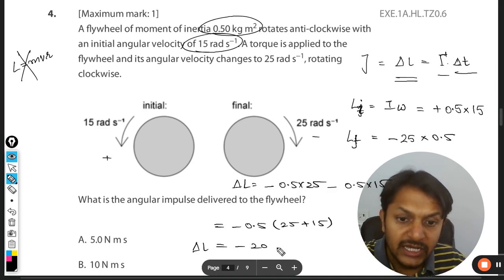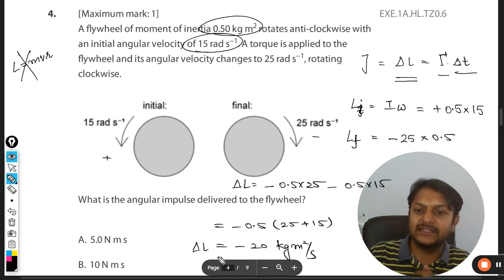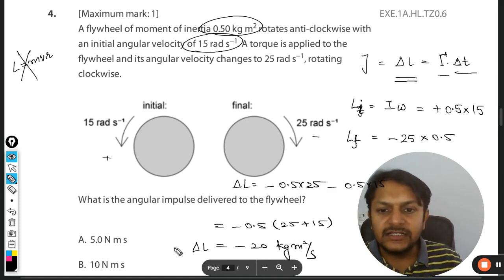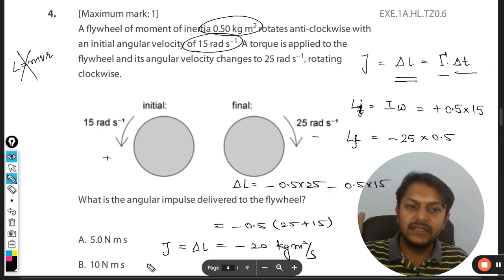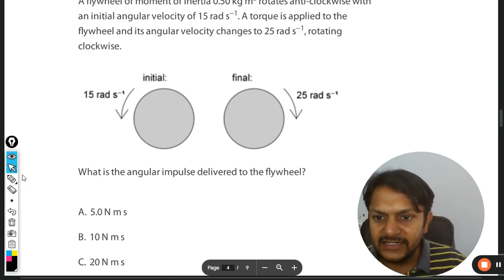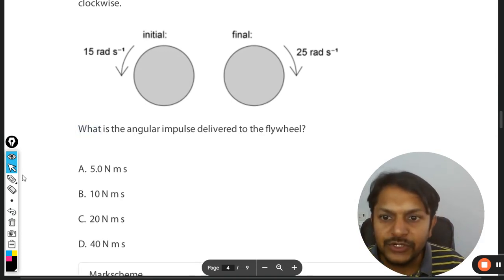So the angular momentum—change in angular momentum—is coming out to be 20, which is kg m² per second as the units. So negative 20, and the same will be the angular impulse. So our answer will be 20. Let us see if we are getting the correct answer or not. And yes, the answer 20 is the C option. Let's see what the markscheme is saying, and of course the answer is correct.